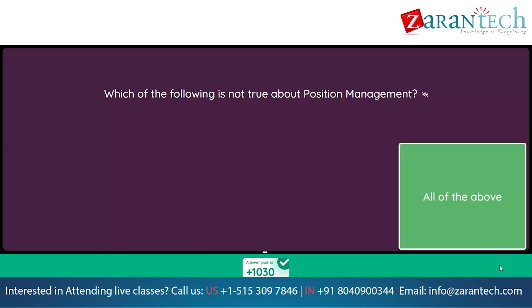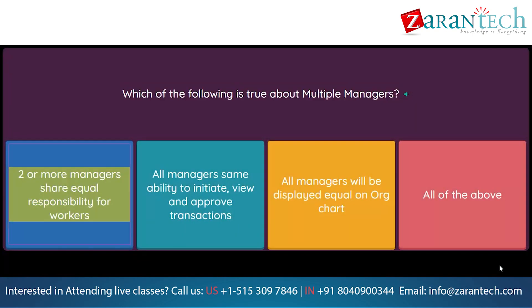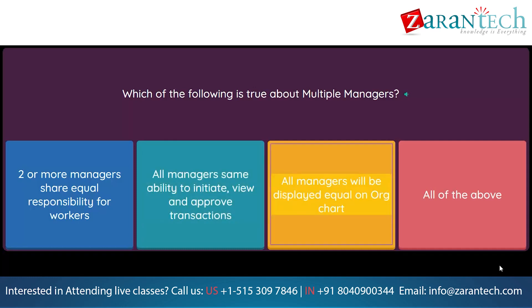Which of the following is true about multiple managers? Option 1: Two or more managers share equal responsibility for workers. Option 2: All managers have same ability to initiate, view, and approve transactions. Option 3: All managers will be displayed equally on the org chart. Option 4: All of the above.